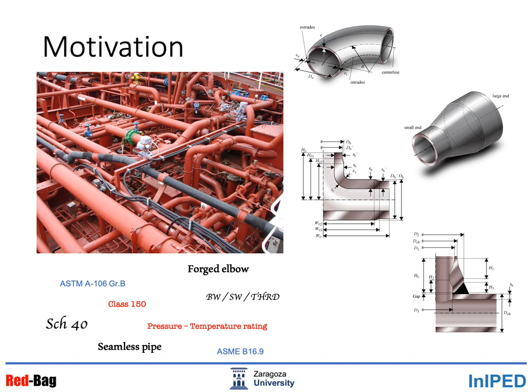Why are pipe classes necessary? A pipe network is made up of pipes and many other fittings such as elbows, reducers, tees, and welder leads. But how should we choose the right type of connection, the right size, the correct material, and dimension standards for each situation?